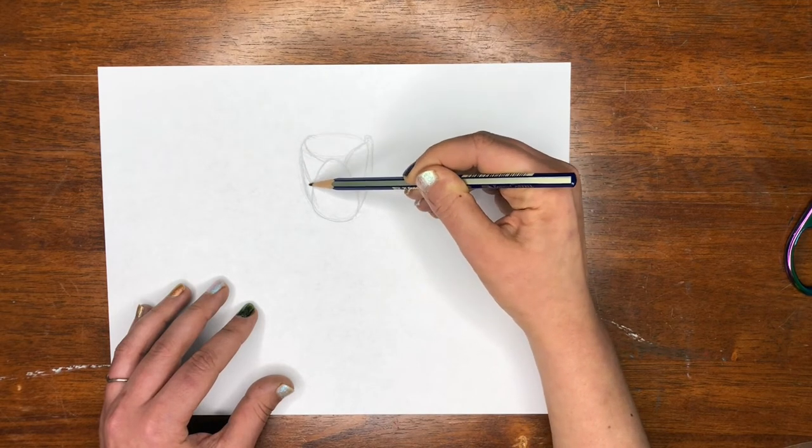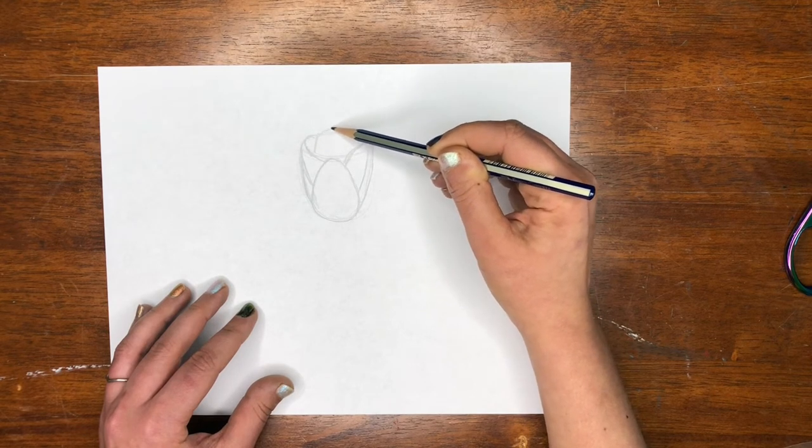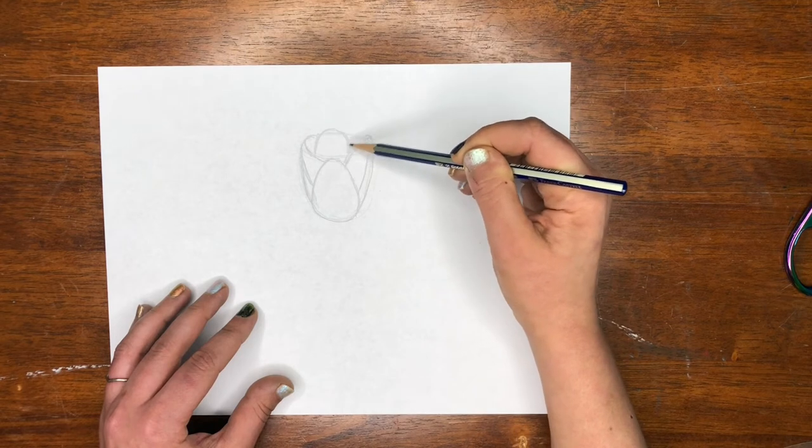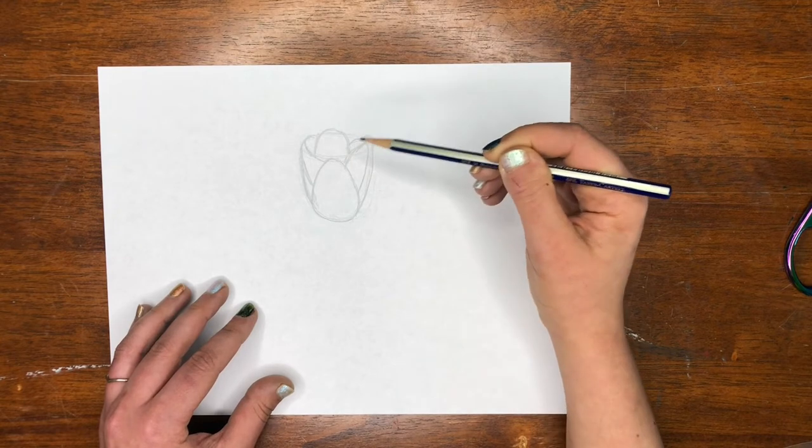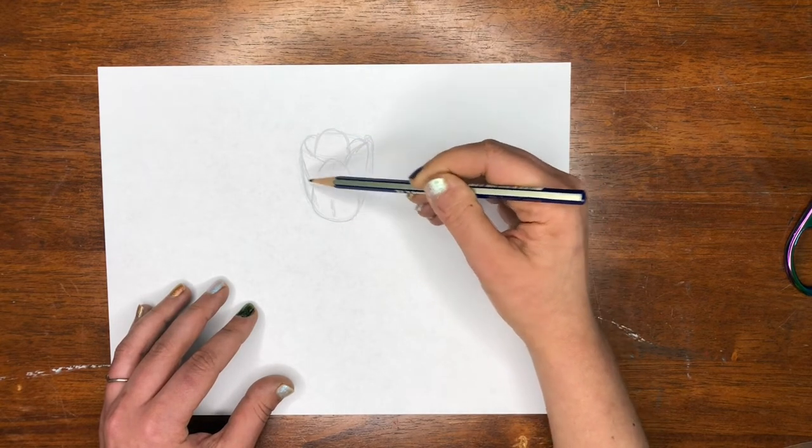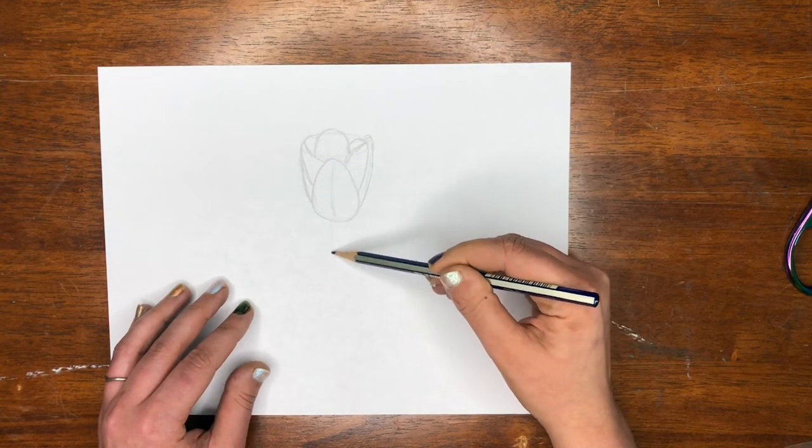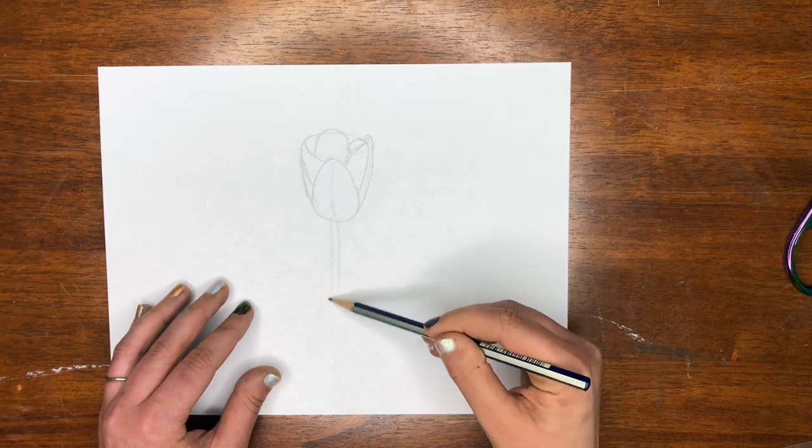So we're seeing the inside and the outside of this petal, and then we have our petal that's in back. So there is our kind of simple tulip. Now we can come down with our stem. They are pretty straight but they do have some curves and irregularities.